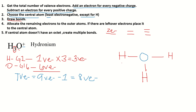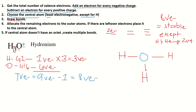All atoms need to have eight valence electrons to become stable — they are happy with eight valence electrons. This is the octet rule. The exception is hydrogen and helium: they are happy with only two valence electrons, and this is called the duet rule.